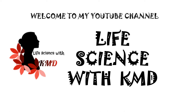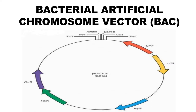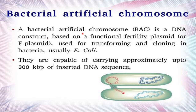Hello everyone, welcome to my YouTube channel Life Science with KMD. Today I am going to explain about Bacterial Artificial Chromosome vector. Bacterial Artificial Chromosome vector, also called BAC, is a DNA construct based on the functional fertility plasmid or F-plasmid used for transforming and cloning in bacteria, usually E. coli.